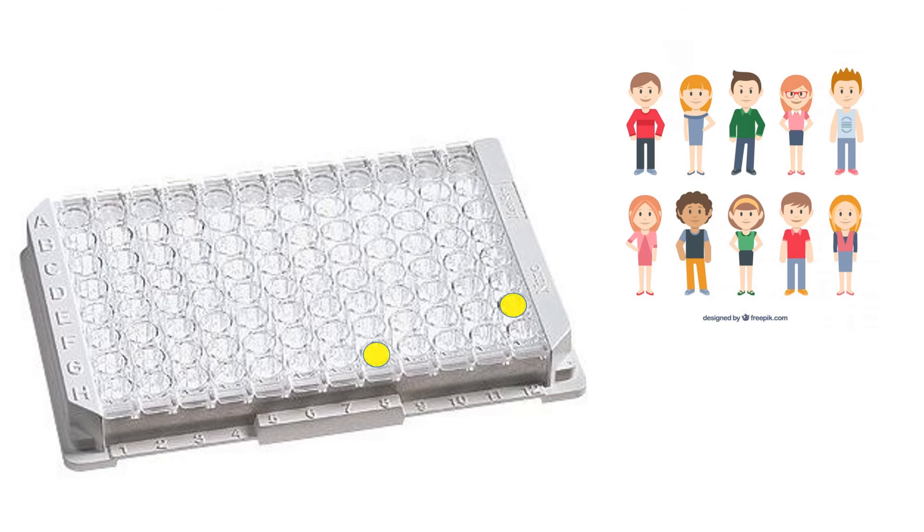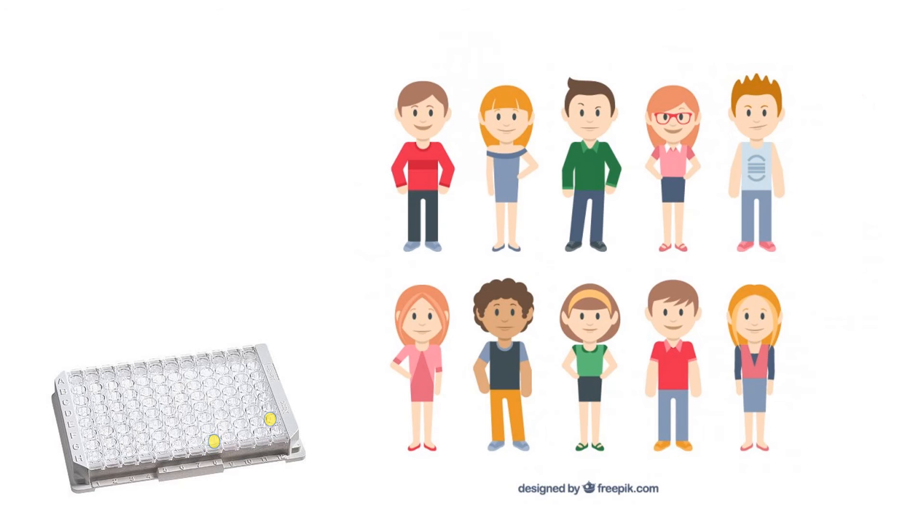If you look at the ELISA plate as part of the immunoassay, you would see two of the wells in this particular case fluorescent. Then those people who have the disease can be told that they have the disease and need treatment, and those who are negative can be told the good news.